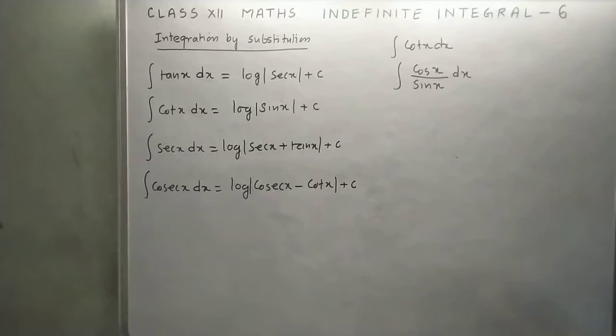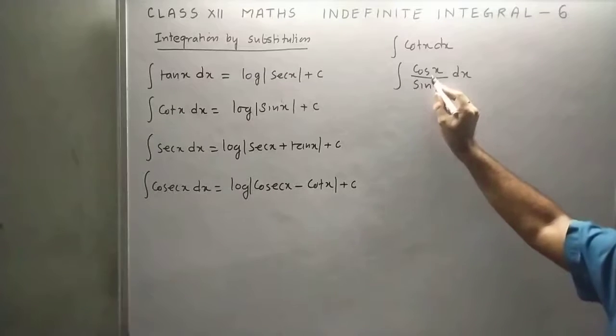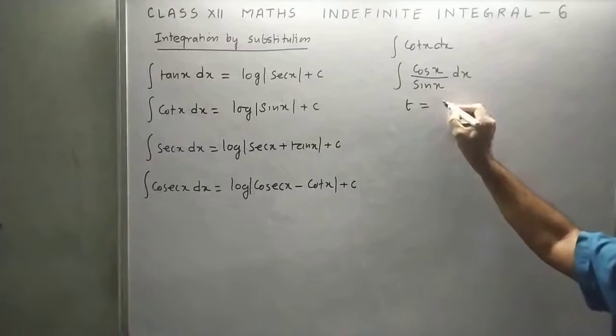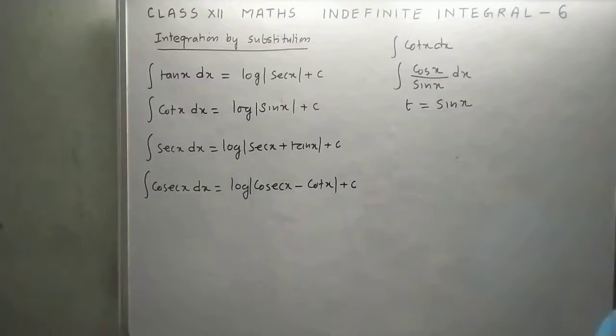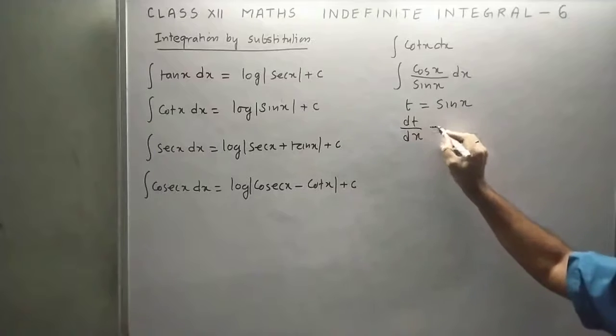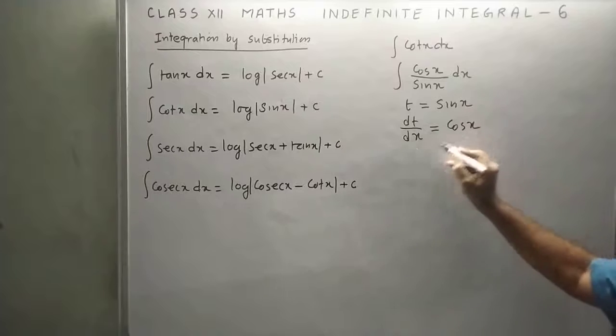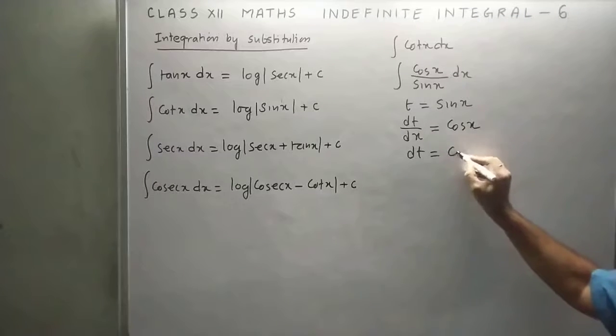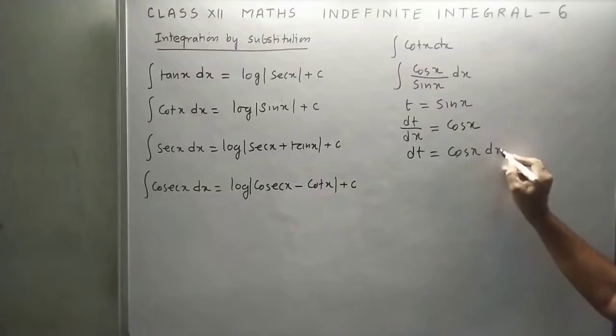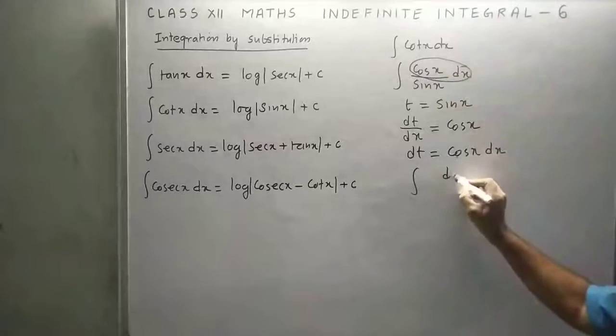You can see we have derivative of sin which is cos, so we can take t equals sin x. Now differentiate this: dt upon dx equals cos x. Therefore, dt equals cos x dx.